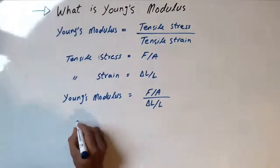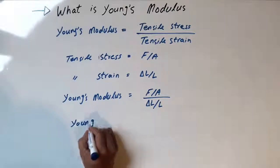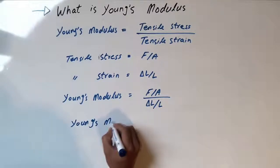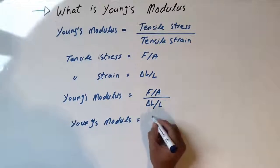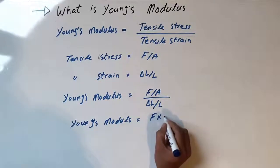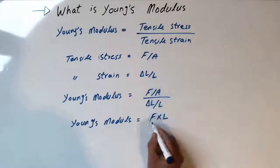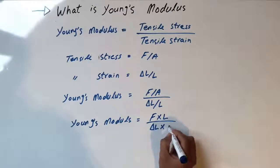So the Young's Modulus is equal to force multiplied by L, because L goes on top, divided by change in length multiplied by area.